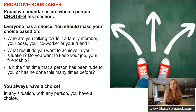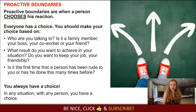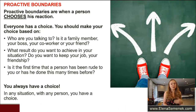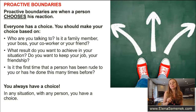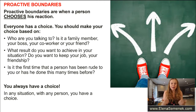And the second type of boundaries is proactive boundaries. Proactive boundaries are when a person chooses his reaction — everybody has a choice. You should make your choice based on the following factors: Who are you talking to? Is it a family member, your boss, your co-worker, or your friend? Second, what result do you want to achieve? Do you want to keep your job, your friendship, your relationship or not? Third, is it the first time this person has been rude to you, or has he done this many times before? Those questions you have to think through before you react.